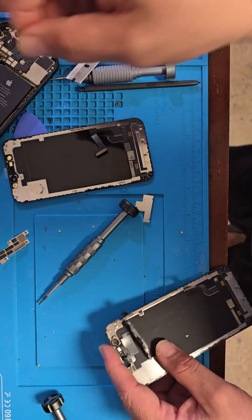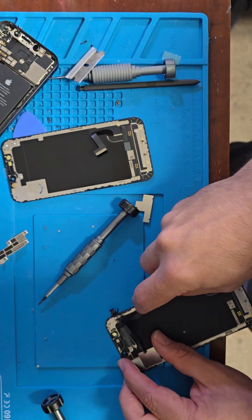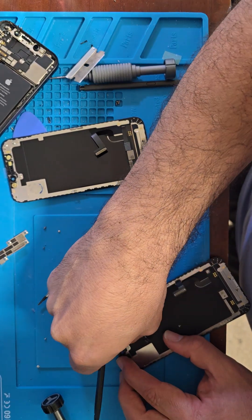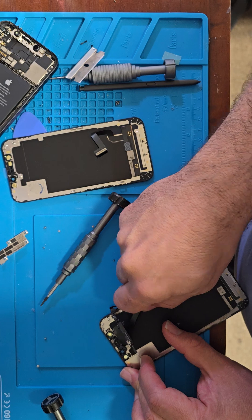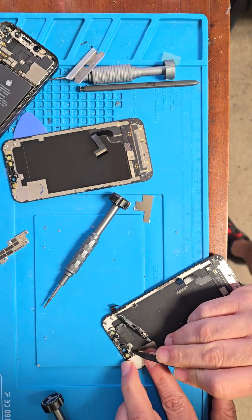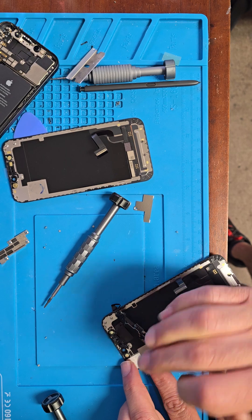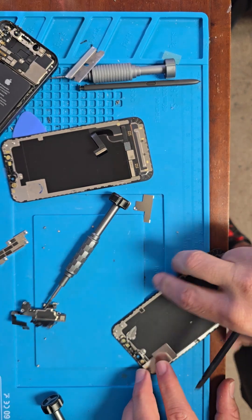After we heat it, we just take this plastic pliers-like tool and we start pulling those. Very easy. Remove the speaker and that's it, done.